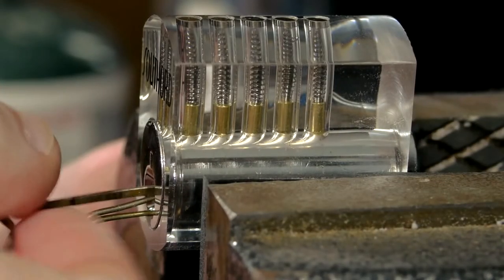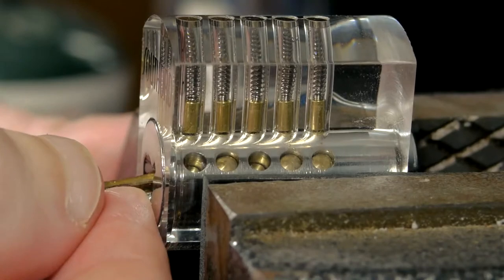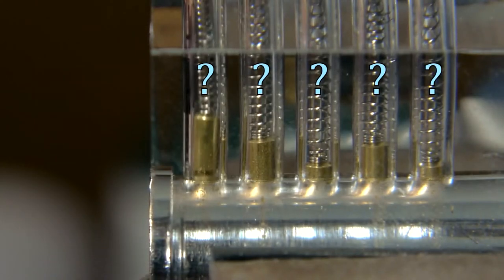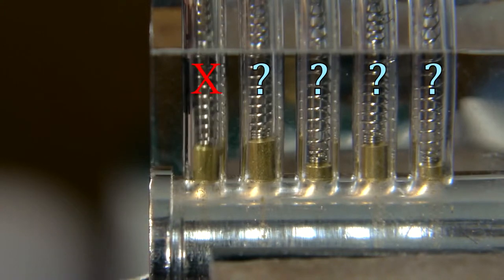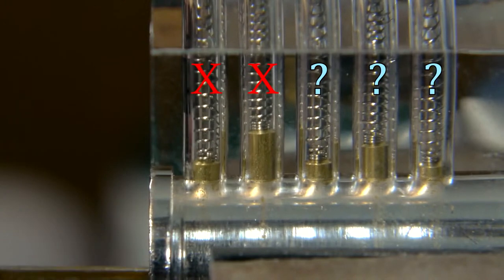For now, the pins that easily raise and fall can be ignored, and our focus should be on finding one that is currently seized. Seized pins can be identified by one at a time feeling each pin with the end of the pick, pressing them up slightly and letting them fall again.